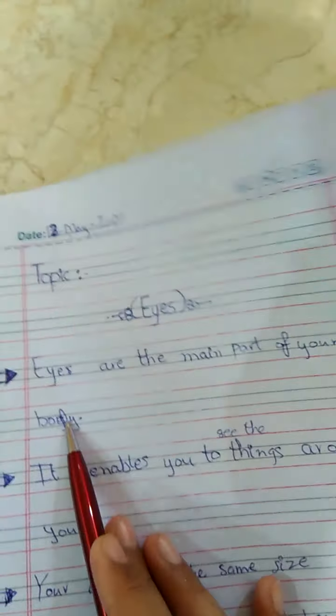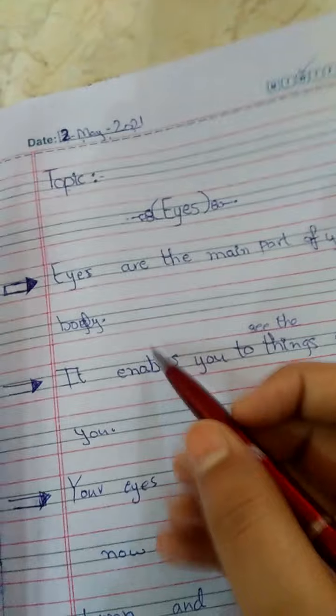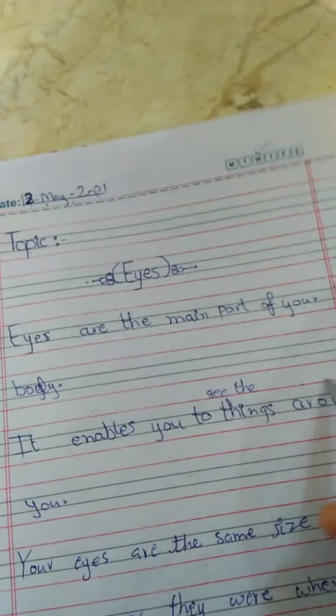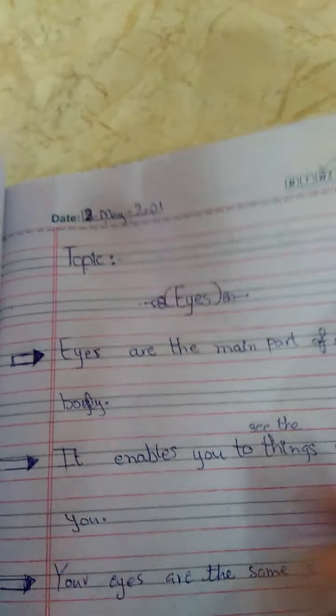Eyes are the main part of your body. As you all know, eyes are the main part of our body. If we don't have them, how can we see? We can't see, so it enables you to see things around you.